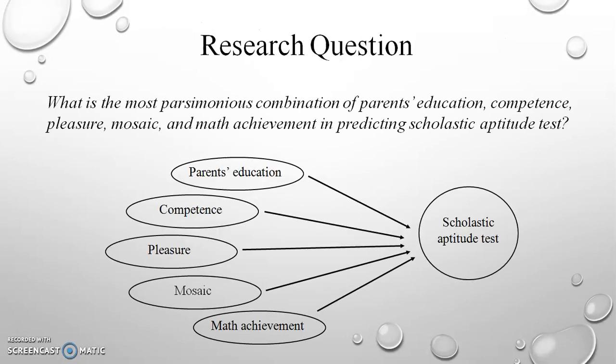The research question we want to answer is: what is the most parsimonious combination of parents' education, competence, pleasure, mosaic, and math achievement in predicting scholastic aptitude test scores? The scholastic aptitude test is the dependent variable and the remaining variables are the independent variables. Essentially, we want to know which fewest independent variables can reasonably predict the dependent variable.